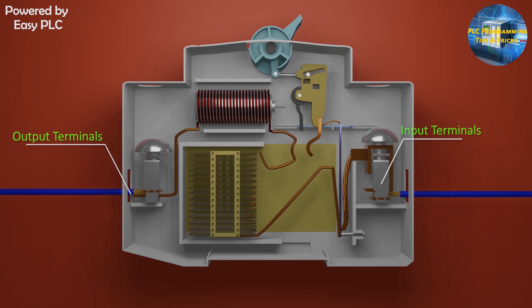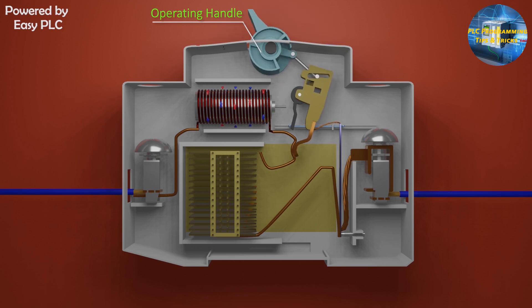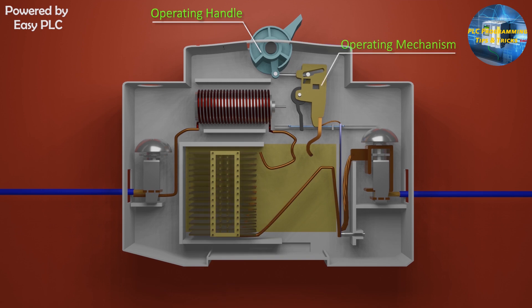MCBs have an operating handle. We can turn on or turn off the MCB with this operating handle. Next we can see our operating mechanism. When we turn on or off the MCB using operating handle, this mechanism works inside the MCB and MCB turns on or turn off.